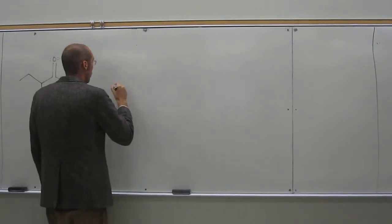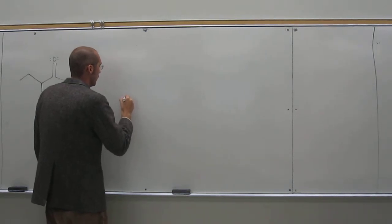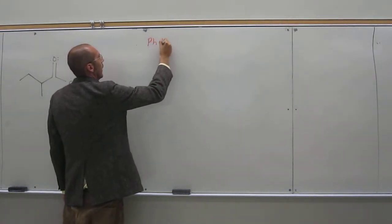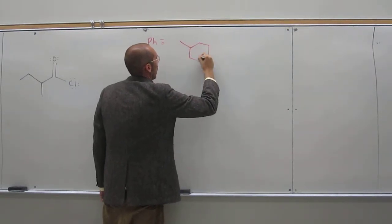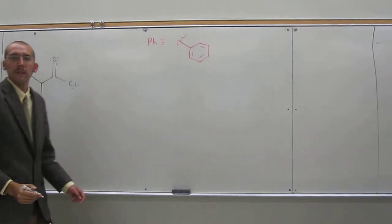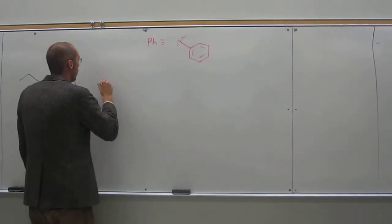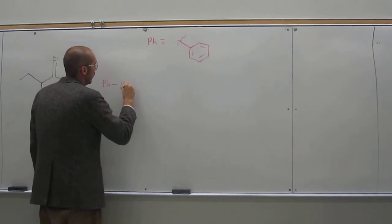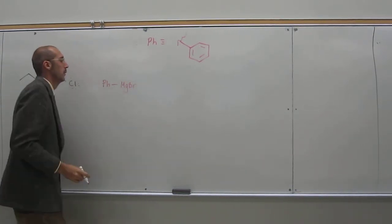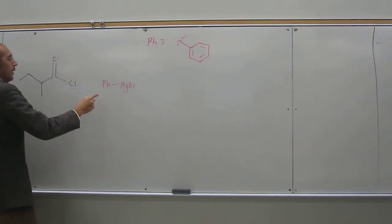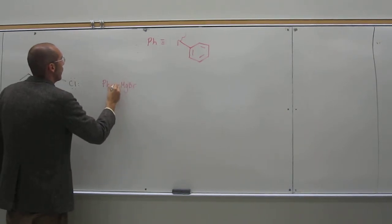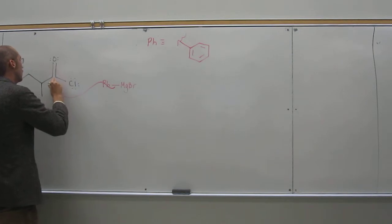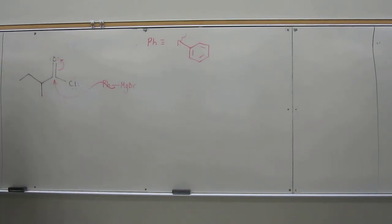Remember, Ph (phenyl) - that's like that group there. So if we've got PhMgBr, what's going to happen - this bond you can call ionic, covalent, whatever - but this Ph group is going to attack the electrophilic carbonyl carbon just like always.